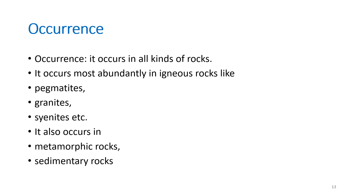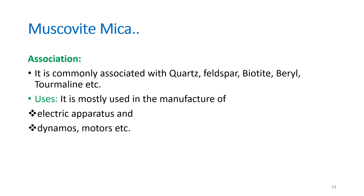Muscovite occurs in all kinds of rocks — igneous, sedimentary, and metamorphic — but most abundantly in igneous rocks such as pegmatites, granites, and syenites. It is associated with quartz, feldspar, biotite, beryl, tourmaline, etc. It is widely used in the manufacture of electronic industry components, electrical apparatus, dynamos, and motors.